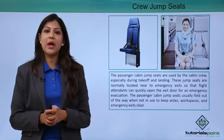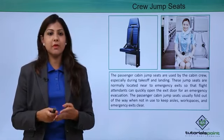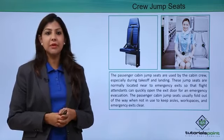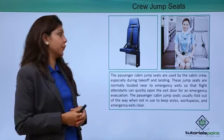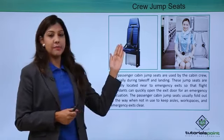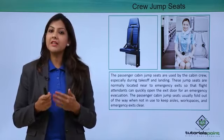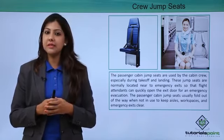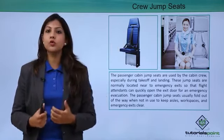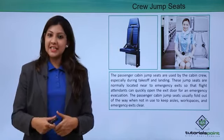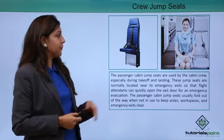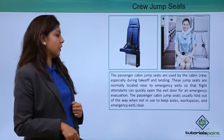Crew jump seats are where crew members sit during takeoff and landing. If there are four crew members, there are four jump seats, and so on. The crew jump seat differs from a passenger seat in that it is foldable — as soon as you get up, it folds back automatically. It also has a harness with a seat belt and a front harness to secure the crew member.